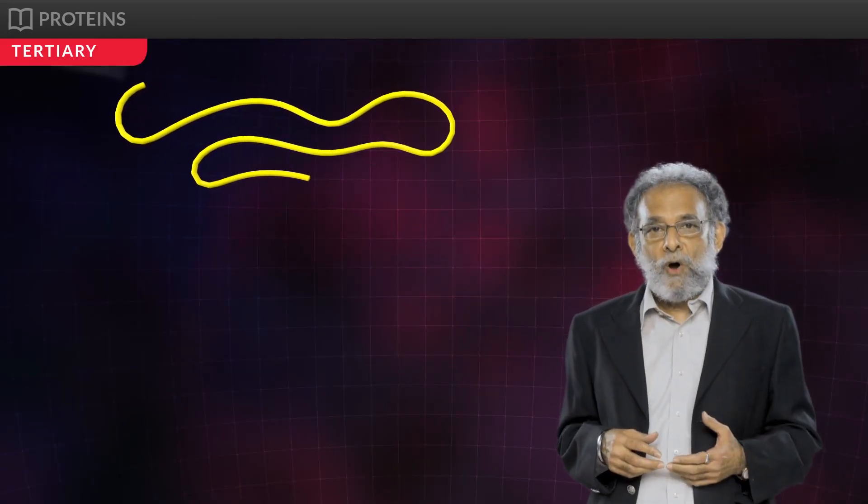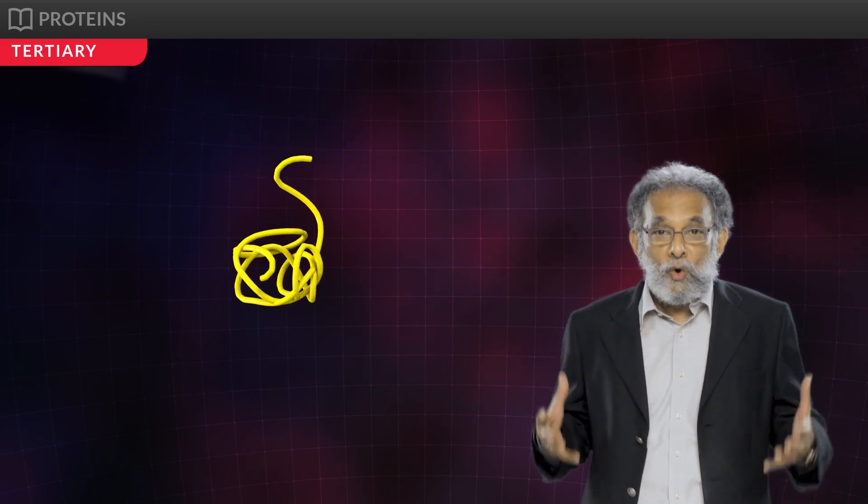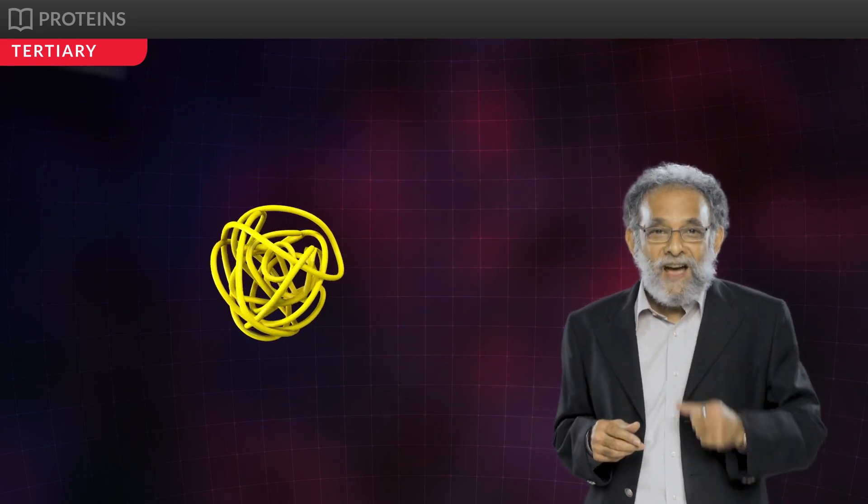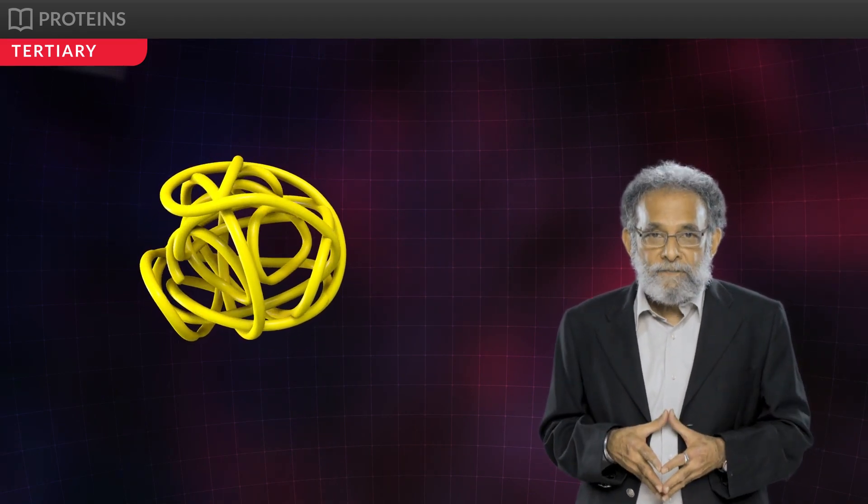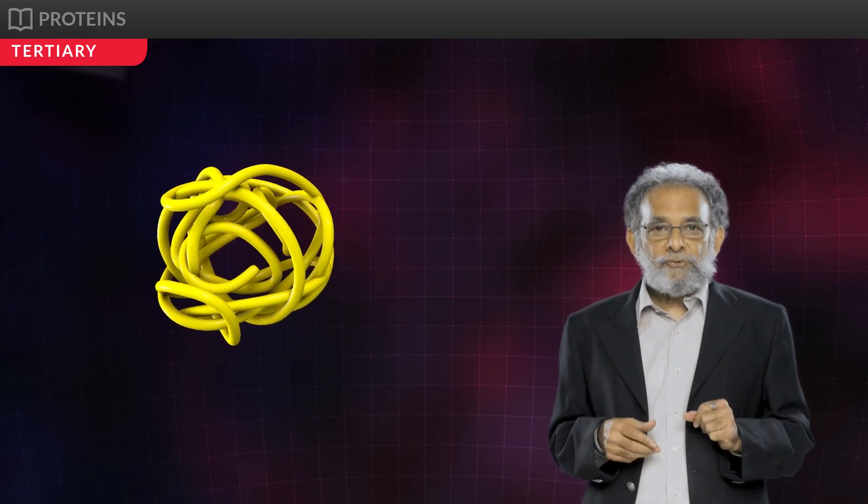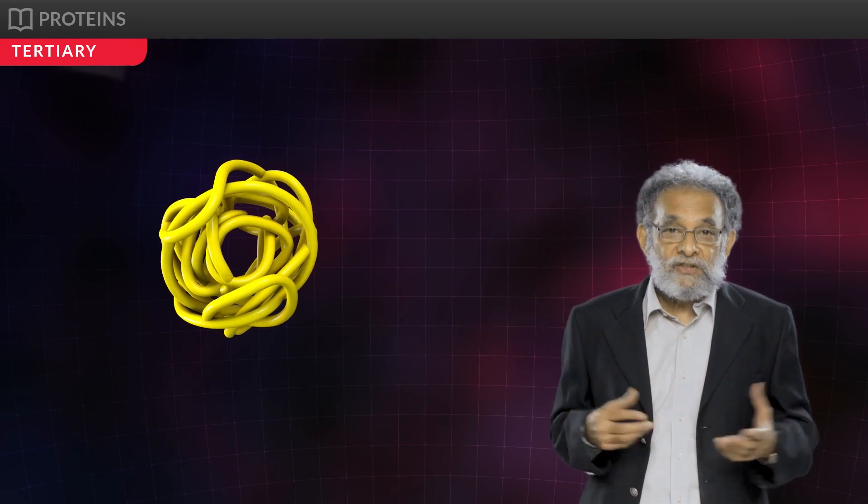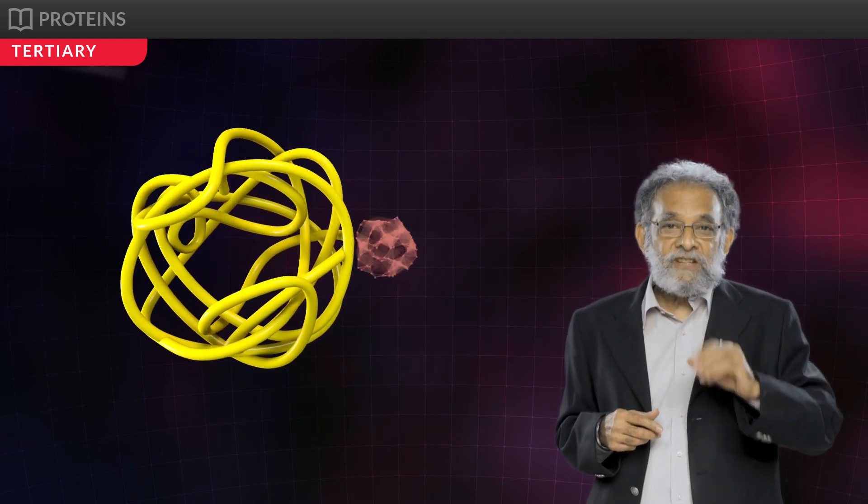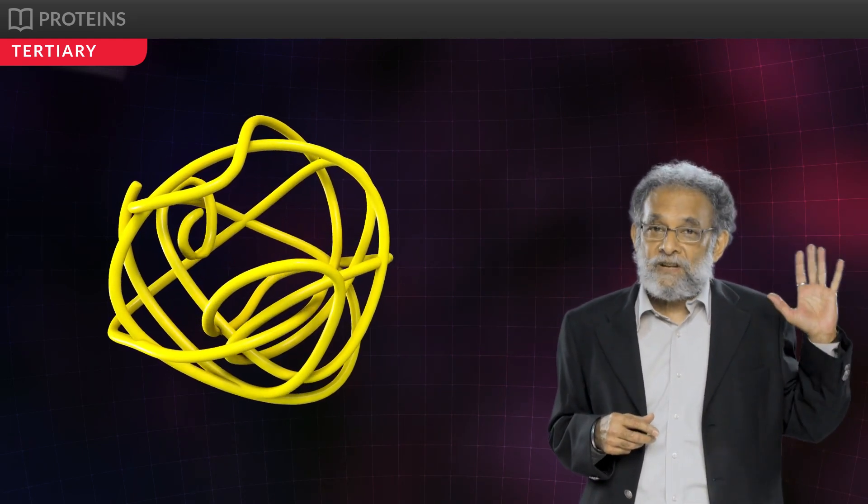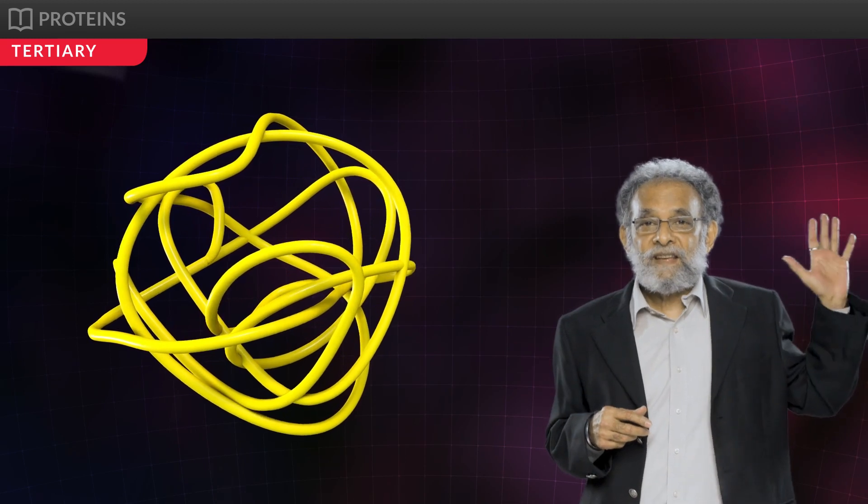In tertiary structure, long protein chain is folded upon itself like a hollow woolen ball, giving rise to the 3D view. Such tertiary structure is found in myoglobin. Tertiary structure is necessary for many biological activities of proteins, such as making an active site for a substrate to bind. If the tertiary structure is disrupted, the protein loses its activity.